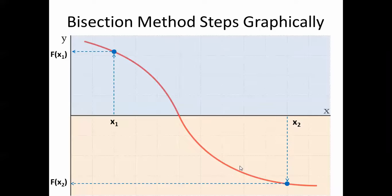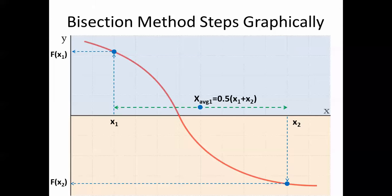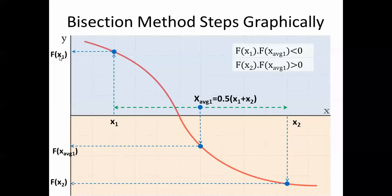The bisection method is based on a simple idea: when you have two points, x1 and x2, where the function has opposite signs — one positive and one negative — you know it passed through the x-axis, so there's a root in between. You take the average of x1 and x2 as the new iterative point, evaluate the function there, check where the sign changes, and repeat — splitting intervals in half until you reach the desired accuracy.